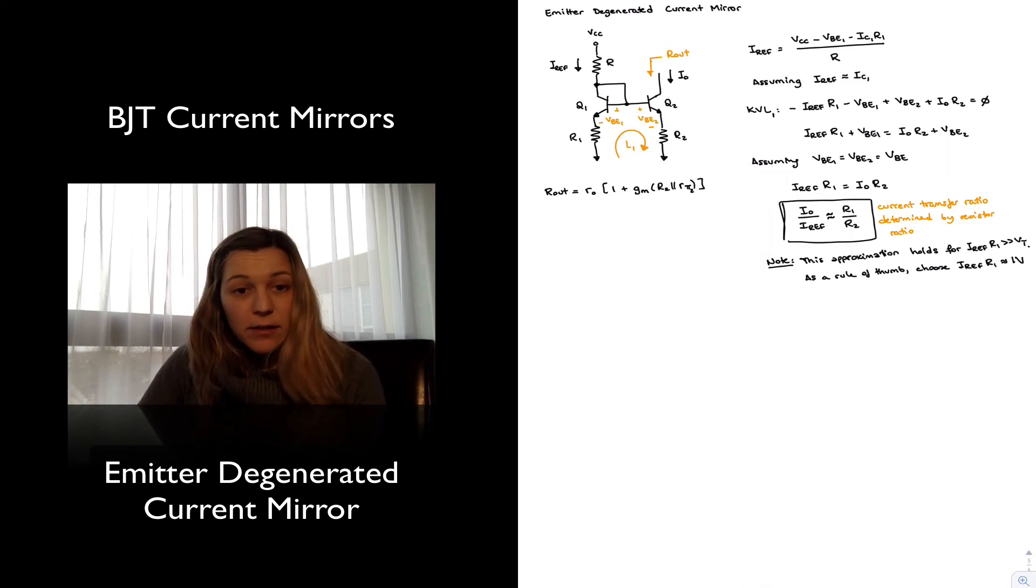One thing to notice is our output resistance has increased with respect to the simple current mirror, and the simple current mirror was equal to little r_o. This has added an additional term, which is gm times parallel combination of R2 and Rpi times little r_o. So it's increased by that much.